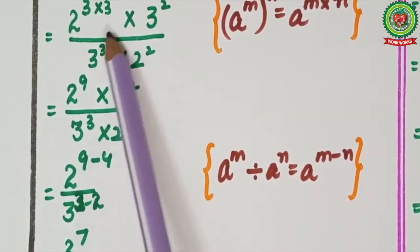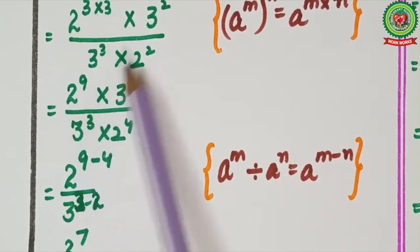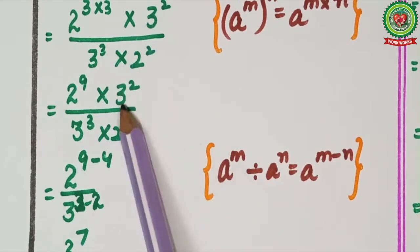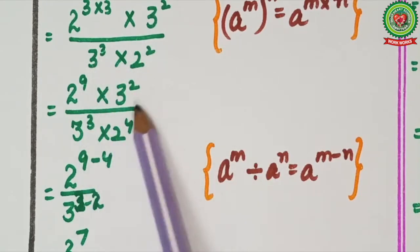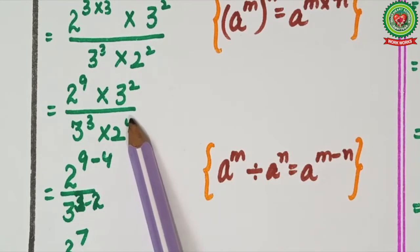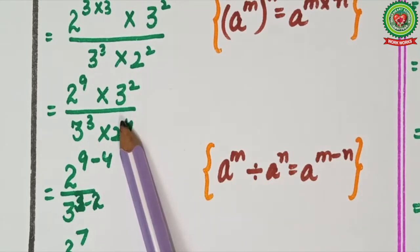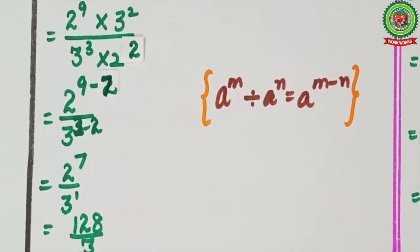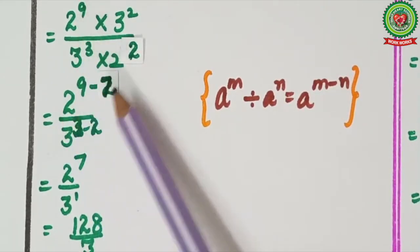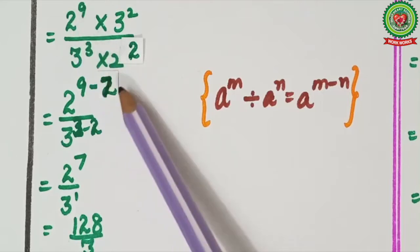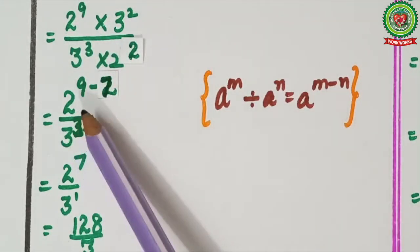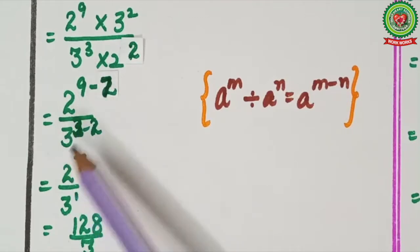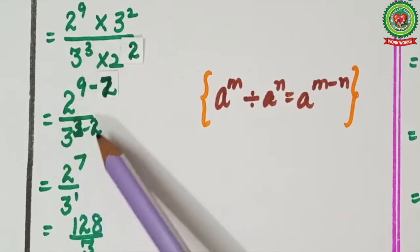So 2 raised to power 3×3 equals 2 raised to power 9. We now have 2 raised to power 9, multiplied by 3 raised to power 2, upon 3 raised to power 3 multiplied by 2 raised to power 2. Since the bases are the same and they are being divided, we subtract powers: 2 raised to power 9 minus 2, upon 3 raised to power 3 minus 2.